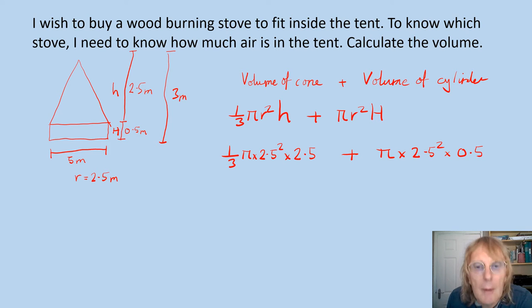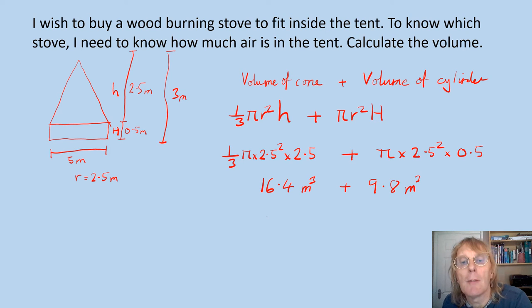One third times π times 2.5 squared times 2.5, I'm going to go for exact amounts - you could leave π in your answer but I'm going to go for 16.4 cubic meters. Plus this one we're going to have π times 2.5 squared times 0.5 which equals 9.8 cubic meters. Add them together and we're going to have equals 26.2 cubic meters. So that would be the volume inside the cone.